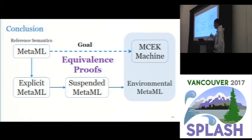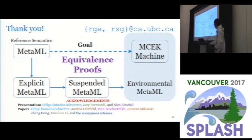All right, and in the keynote Danny shared some personal stories. Here we want to say that you can eat an elephant one bite at a time. We cannot derive MCEK machine directly but could take a detour to derive it. So we systematically refined our reference semantics to explicit MetaML, suspended MetaML, and finally environmental MetaML. We plan to use a framework proposed by David Van Horn and Matthew Might to do static analysis for MetaML. We would like to thank all the people who contributed to my presentation and the paper. Thank you all for your attention.